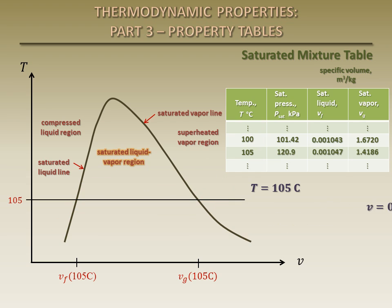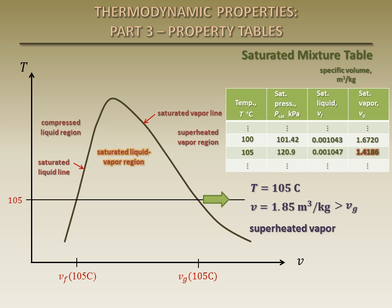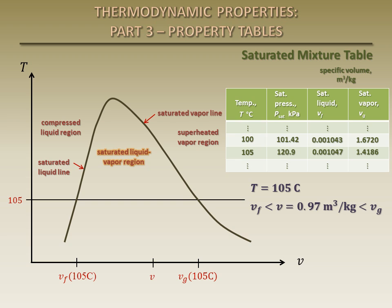Now suppose that we know the temperature and the specific volume. If the specific volume is less than that of a saturated liquid at the given temperature, then it lies to the left of the saturated liquid line, in the compressed liquid region. Similarly, if the specific volume is greater than that of a saturated vapor at the given temperature, then it lies to the right of the saturated vapor line, in the superheated vapor region. If the specific volume is anywhere in between, then we know it's a saturated liquid-vapor mixture at the saturation pressure. Recall that a saturated liquid-vapor mixture has some quality, defined as the ratio of the mass of the vapor to the total mass of the mixture. A saturated liquid has a quality of zero, while a saturated vapor has a quality of one.